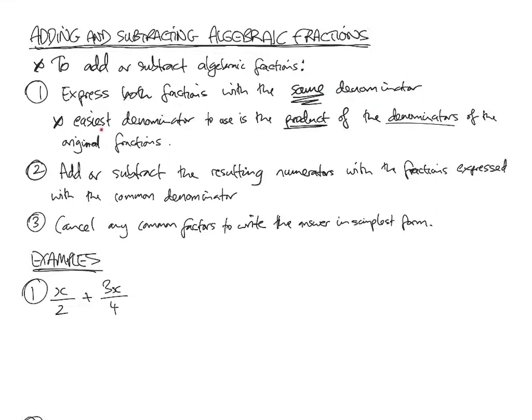The easiest denominator to use that's common to both is just the product of the denominators of the original fractions. The bottom number of the original two fractions that you're adding and subtracting is the denominator. If you times those together, that is a common denominator that you can express both fractions as.